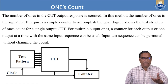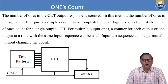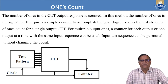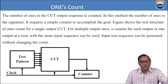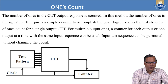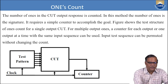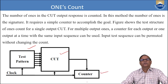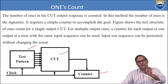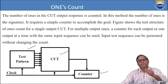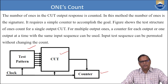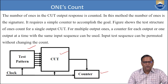Now, ones count: in ones count, the number of ones produced in the circuit output response is counted. This method counts the number of ones as the signature. A simple counter is all that is required. The circuit output is given to a counter which records how many ones are present, and this count is compared with the golden signature. If there is a match, BIST says the circuit is okay; otherwise BIST says the circuit is faulty. That is the ones count method.